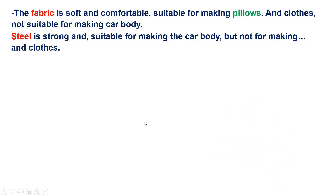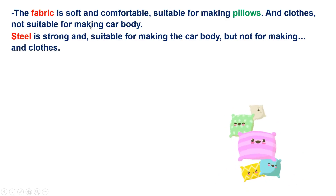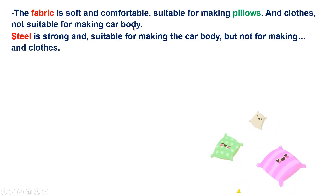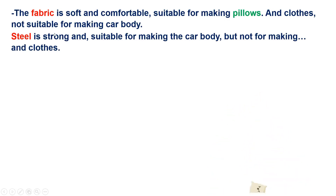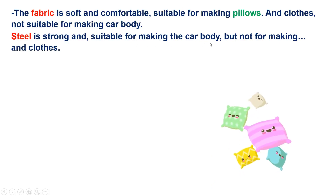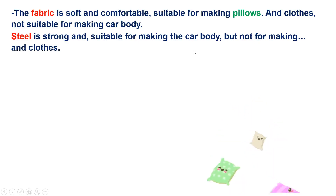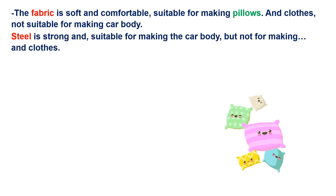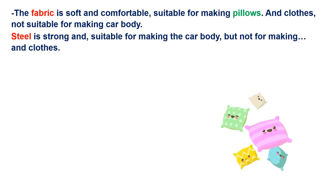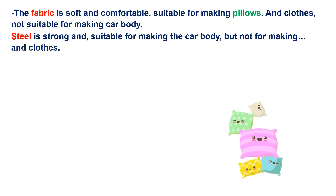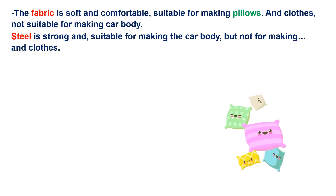This fabric can be used to make pillows and cushions. Car bodies can also be made from iron or other materials. Remember: heat transfer, factors affecting it like handle length and material type, conservation of mass, what things are made from, and smart materials.